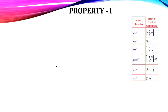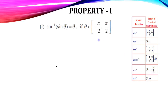Let us see Property 1. Before seeing this property, recall the range of the inverse functions. For sin inverse, the range is the closed interval [−π/2, π/2]. For cos inverse, closed interval [0, π]. For tan inverse, open interval (−π/2, π/2). For cosecant inverse, closed interval [−π/2, π/2] except 0. For secant inverse, closed interval [0, π] except π/2.